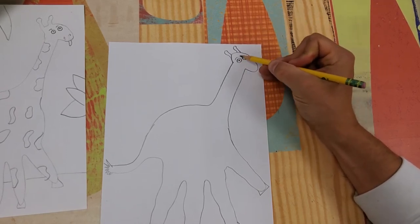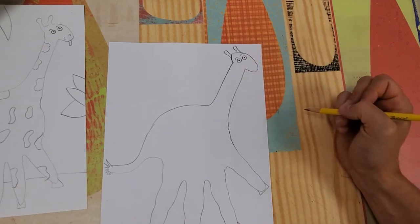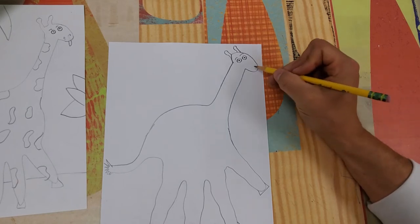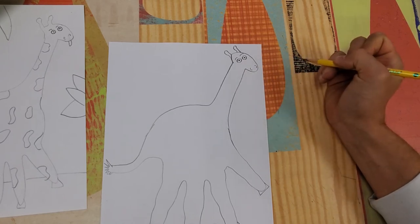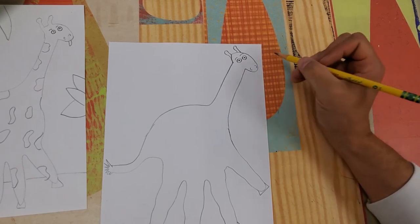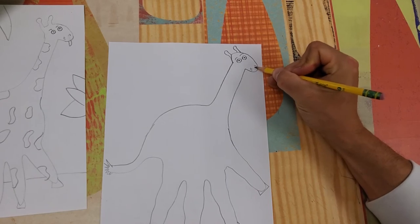Those are their ears. And then we've got two eyes. I'm going to give a little expression to this giraffe's face with his eyebrows. So two circles, dot inside, little eyebrows.